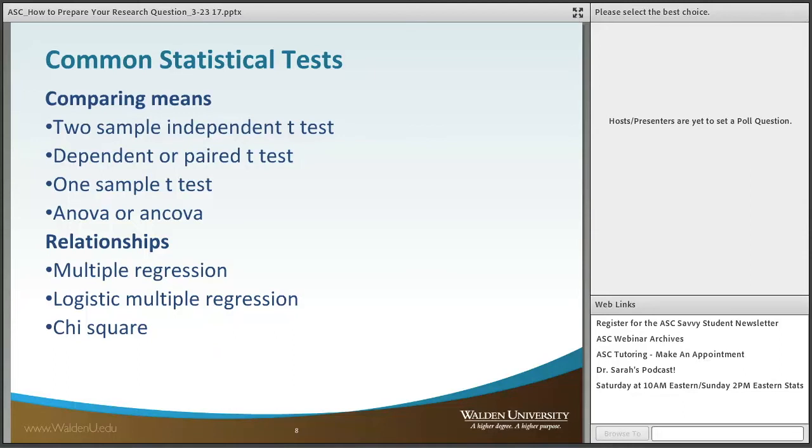Such as something like did men score higher on this test than women—that would be a two-sample independent t-test. The word independent is important because it means that someone cannot be in group one and in group two.